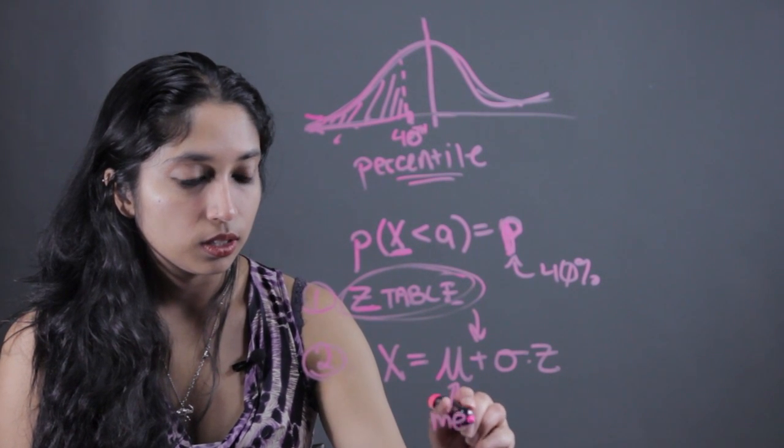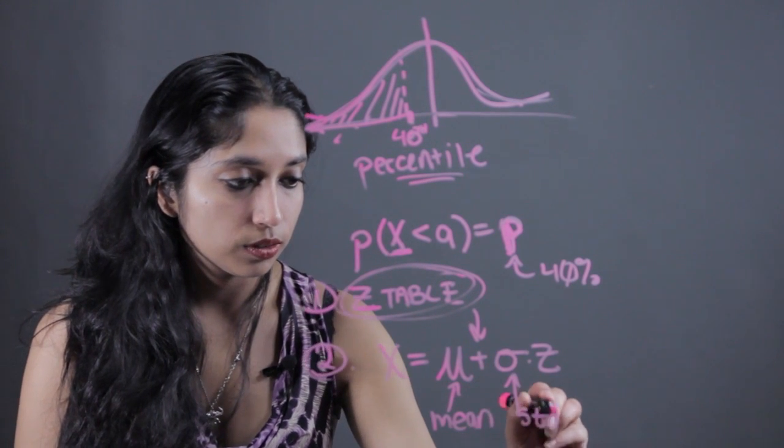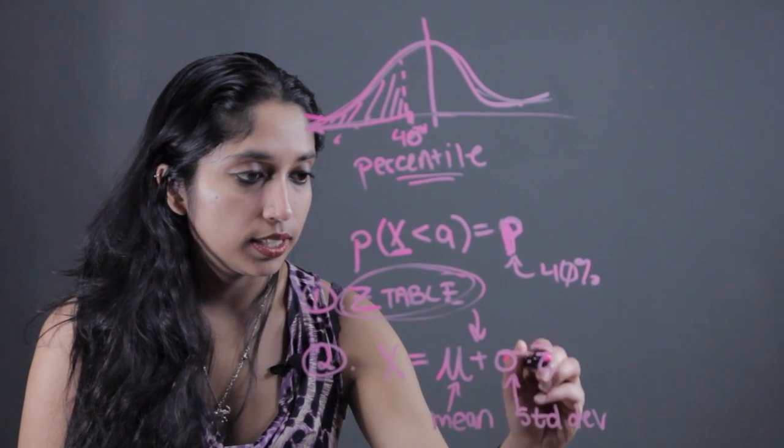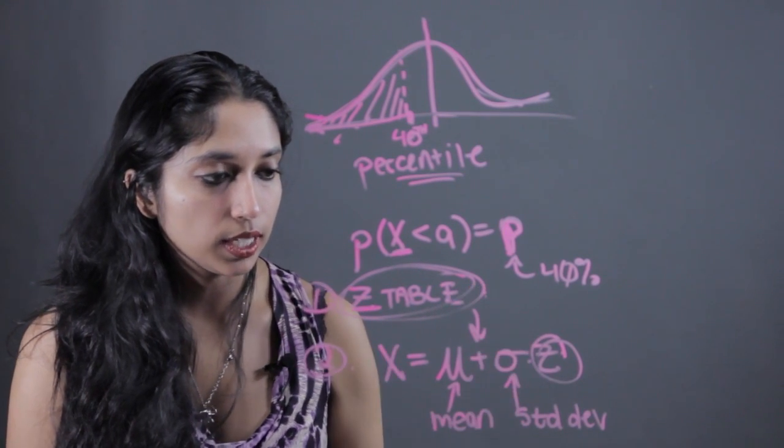Where mu is the mean, sigma is the standard deviation, and Z is that standard normal value that we looked up in this step.